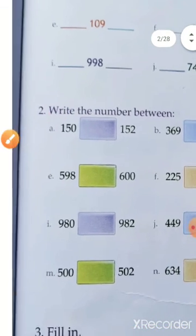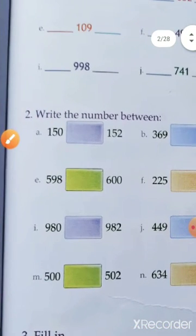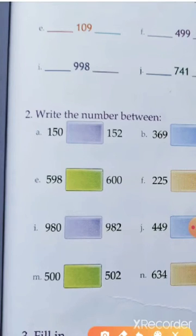And question number 2. Write the number between. You have to fill here number. Also, you have to consider here the digit that is on the 1's place.